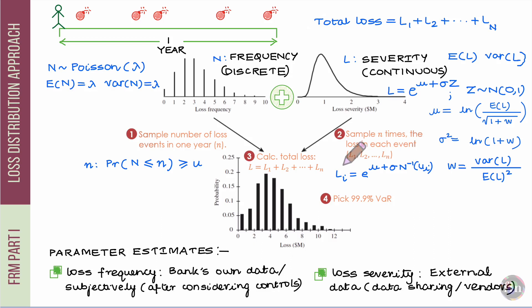In this video, we will take a look at the Loss Distribution Approach (LDA) for the purpose of estimating operational risk capital. To understand where the LDA fits in, recall our discussion about the Advanced Measurement Approach (AMA). In that approach, for a given choice of operational risk category and business line, we need to plot the loss distribution and estimate the difference between the 99.9 percentile loss and the expected loss. To make the AMA work, we need to build the loss distribution, and that is what we focus on in this video.